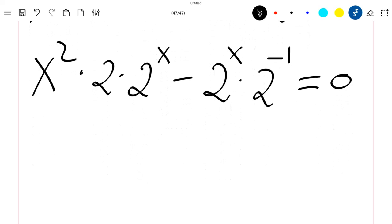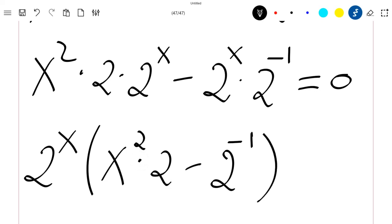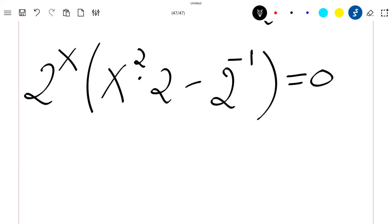Now if I pull 2 power x outside, I will just have this times x square times 2 minus 2 power minus 1 equal to 0. I know that this can never be equal to 0, so this is different to 0. So if this product is equal to 0,